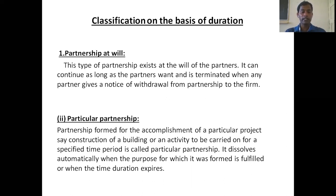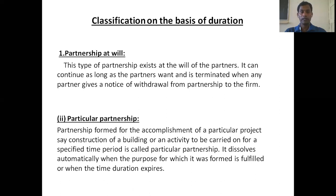To recap: on the basis of duration we have two types of partnership. First, partnership at will — partners can continue if they want or leave if they don't. Second, particular partnership — formed for one specific task or activity, and the partnership firm is terminated after that work is finished.